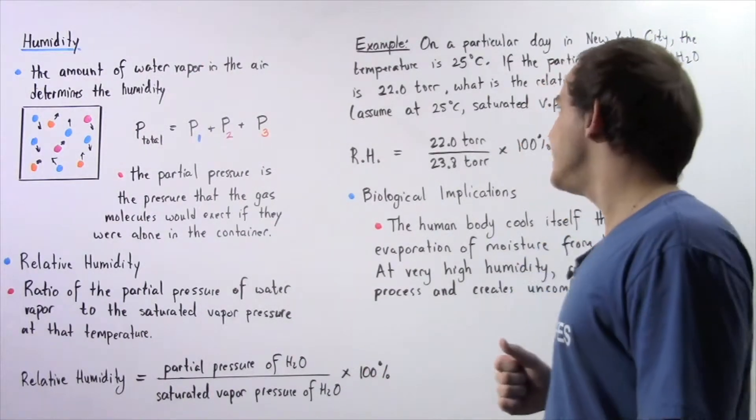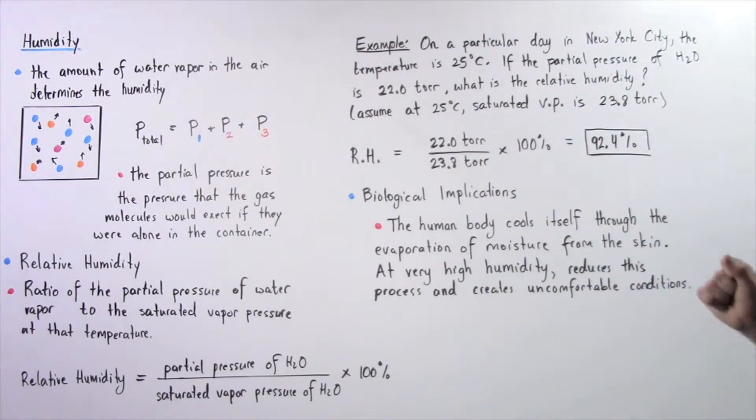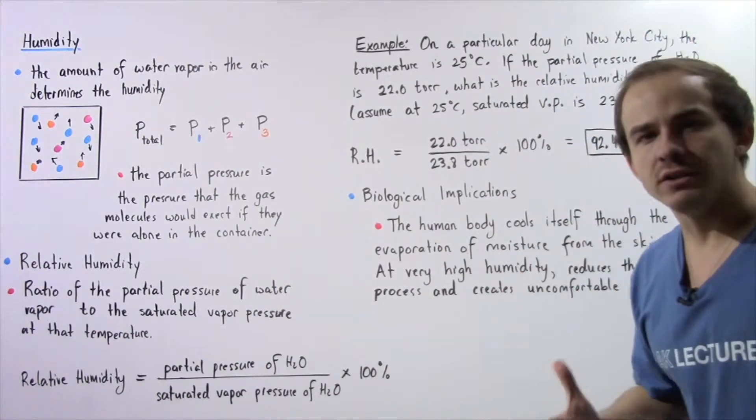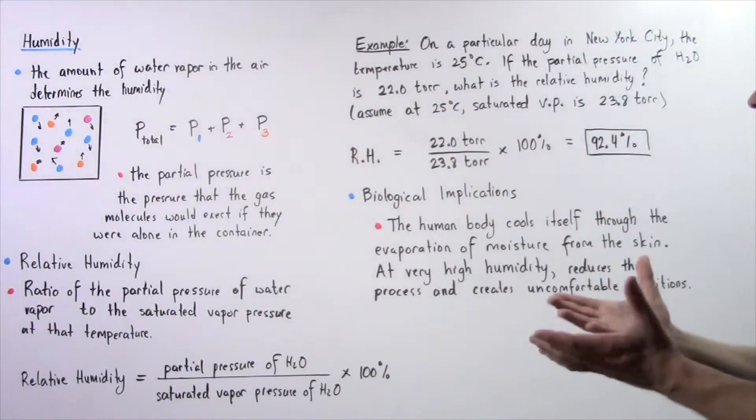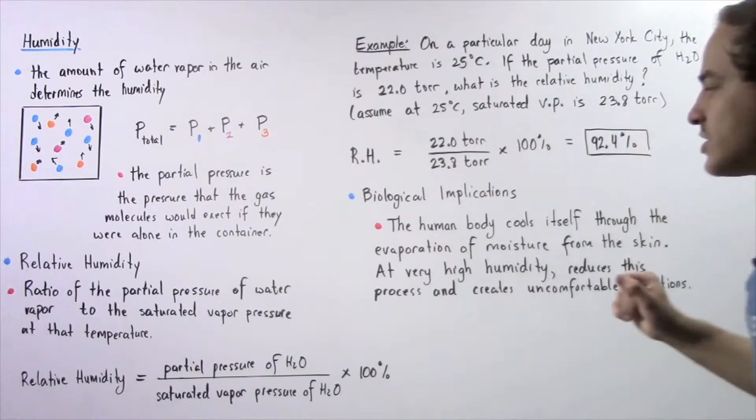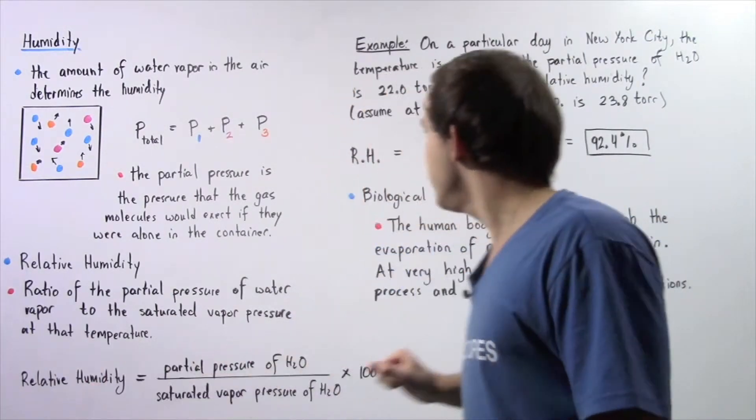We need to determine the saturated vapor pressure of water at 25 degrees Celsius. We can find that online or in a textbook. At 25 degrees Celsius, the amount of water that can be held in the air is 23.8 Torr.